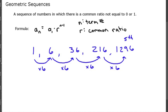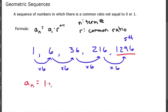We're looking for a sub n, which is what we're trying to find. That equals the first term a sub 1 — our first term was 1 — times our common ratio r, which was 6.